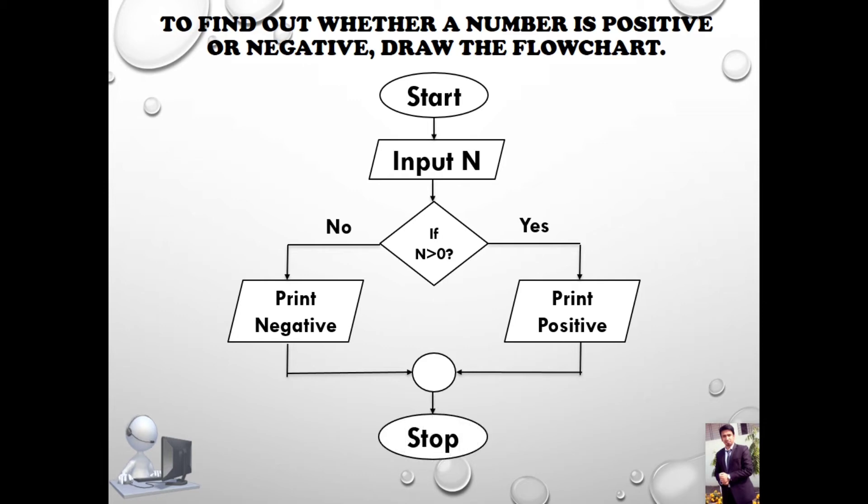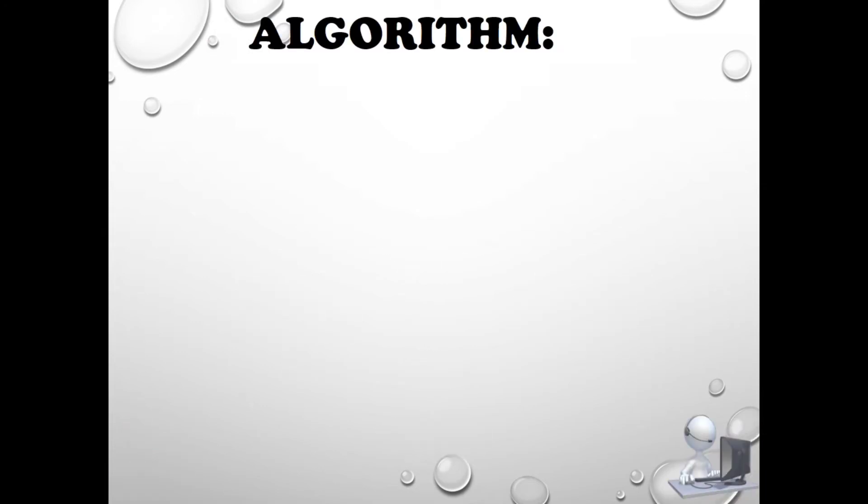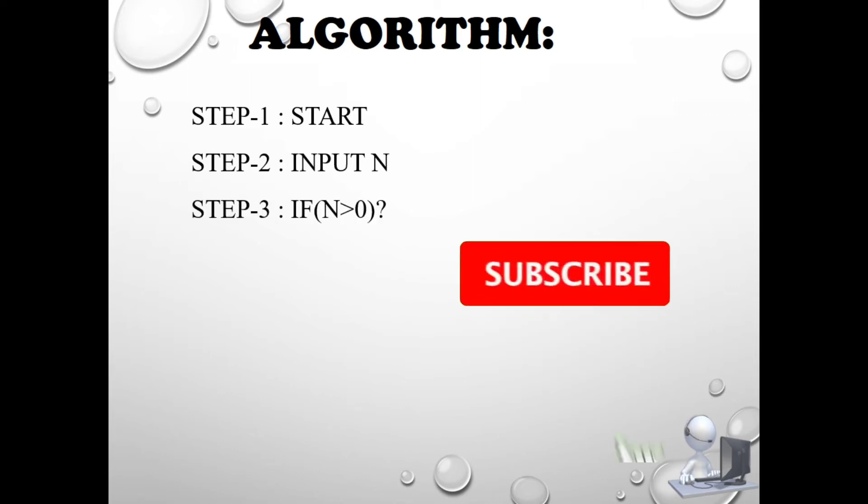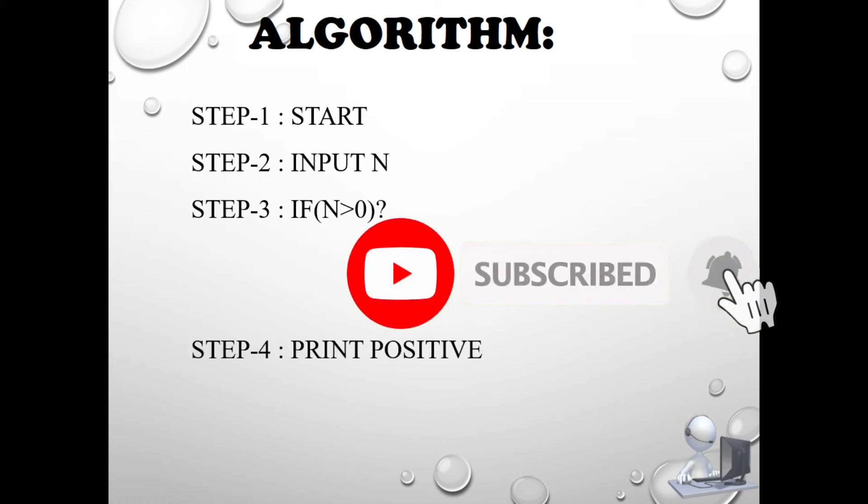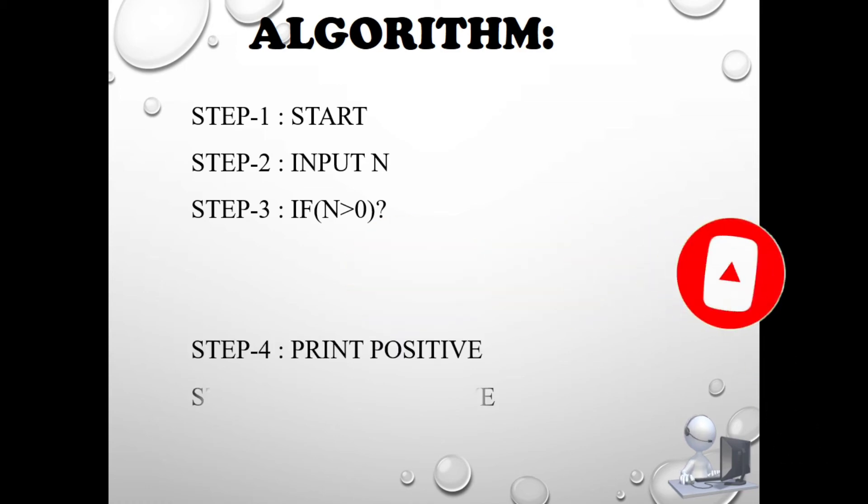This is our algorithm. We have to write step by step. Step one: Start. Step two: Input N. Step three: If N is greater than zero. Step four: Print positive. Step five: Print negative.